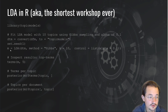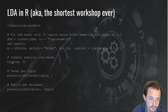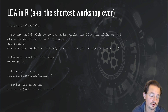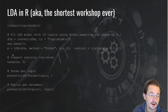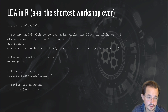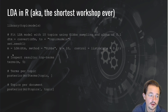Once you fit your LDA model, you can have a look at the results. The first thing people generally do is look at the top terms. This gives you the 5 or 10 — or whatever number you fill in — best fitting terms for each topic, giving you a good first estimate of what the topic is actually about.